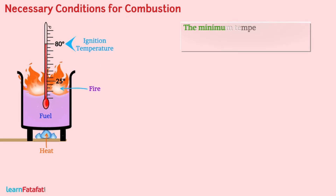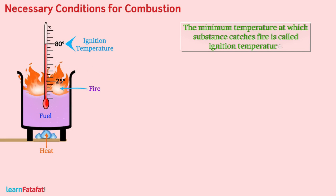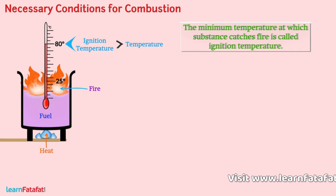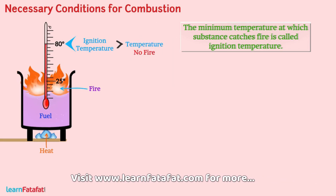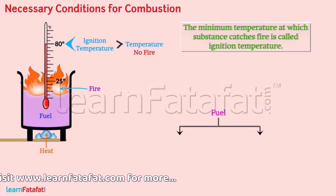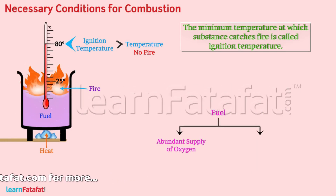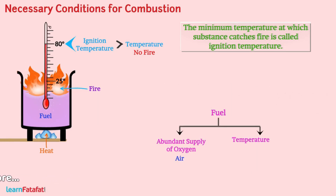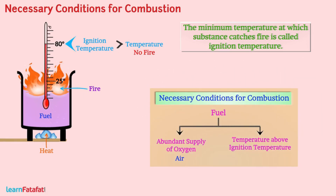The minimum temperature at which a substance catches fire is called ignition temperature. If the temperature of a substance is lower than the ignition temperature, the substance does not catch fire. This means that fuel, abundant supply of oxygen or simply air, and temperature above ignition temperature are the necessary conditions for combustion. We will continue talking on this topic in the next video.